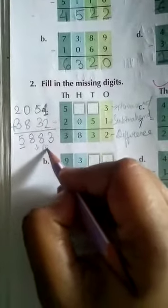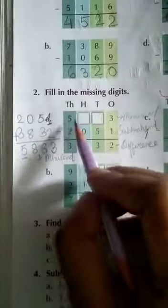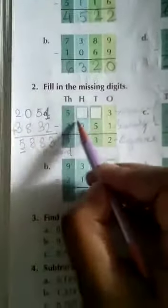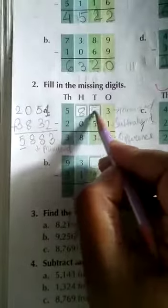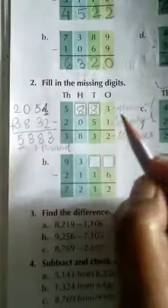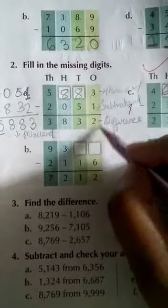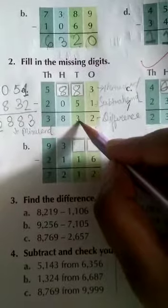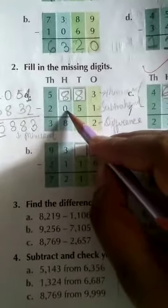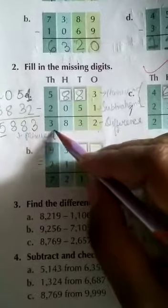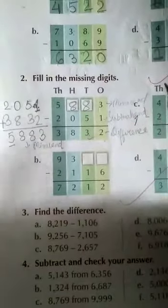So now you see 5 is given in 1000s place. So this answer is what? This is called minuend. So here you see, 5 is already given. So 100s place what will be the answer? It will be 8. 10s place it will be again 8. And 1s place it will be 3. Is it clear? Now you subtract 3 minus 1 is 2, 8 minus 5 is 3, again 8 minus 0 is 8, and 5 minus 2 is 3. So this is how the answer is solved.